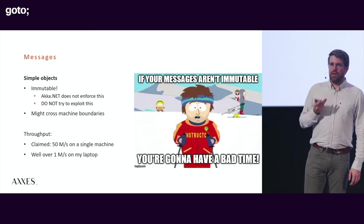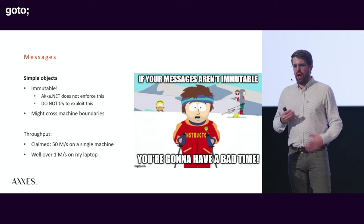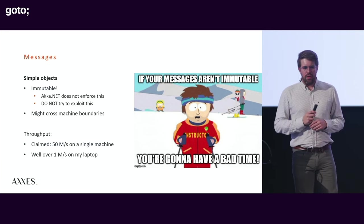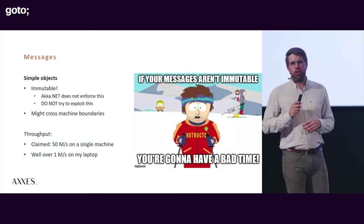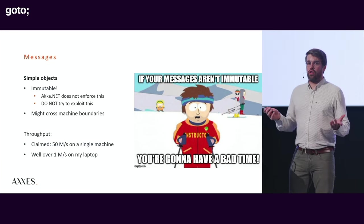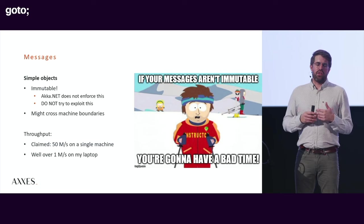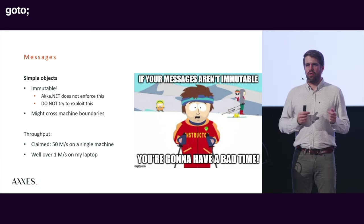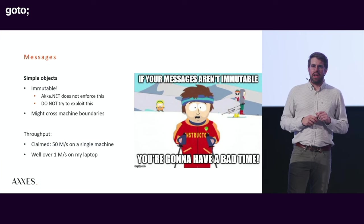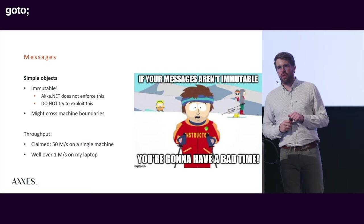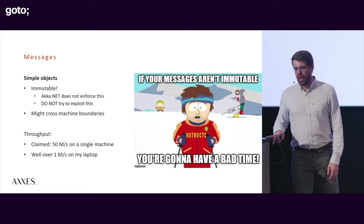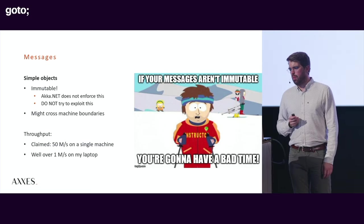Messages are very simple objects — in Akka.NET they just have to be a .NET object. The runtime doesn't force your messages to be immutable, but it's a very bad idea to make them mutable because they might cross a machine boundary, get serialized and deserialized, and whatever you were trying to do by mutating the message will no longer work. They claim 50 million messages per second on a single server; I can reliably get about 2 million on my four-year-old laptop, so that claim is probably true.